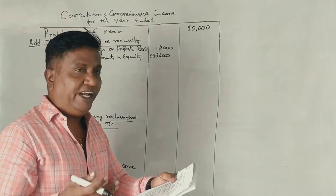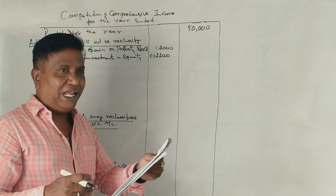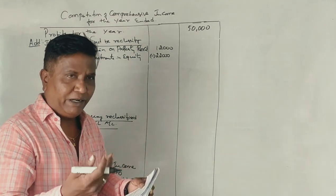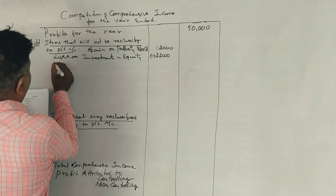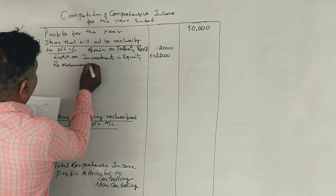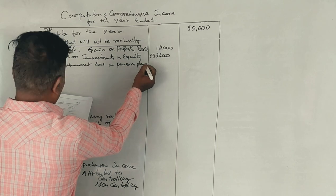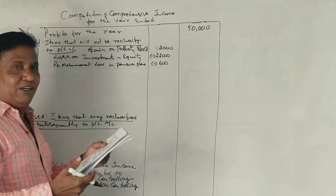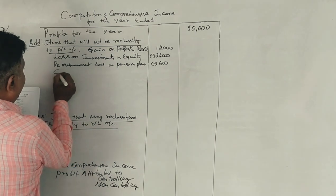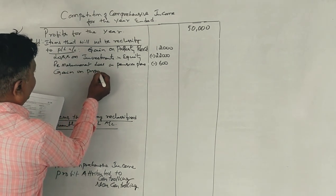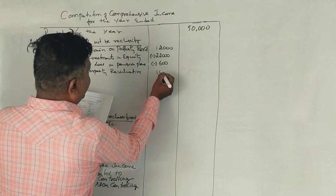Next, re-measurement losses on defined pension plans — pension plans are re-measured, so re-measurement is required. That is 600 rupees, which is a loss. Next, share of gain on property revaluation — gain on property revaluation — that is Rs. 1,000, a plus value.